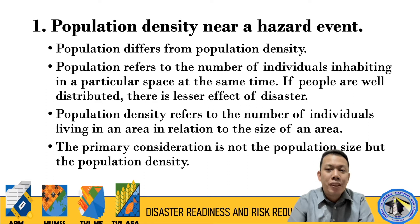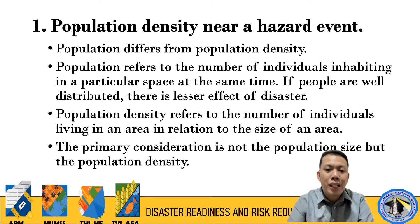For example, consider a fault line — the cause of earthquakes. Is there population density near that fault line? How many people per square meter, per 10 square meters, per 100 square meters? If a disaster happens and population density is high, more lives and property can be damaged or lost because of that hazard.